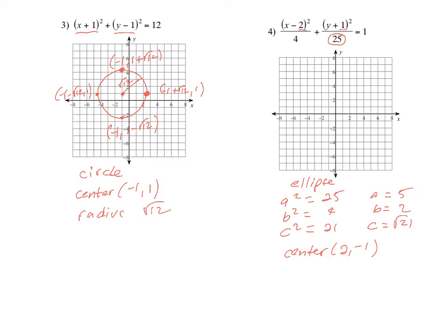Starting at the center, since the major axis is vertical we go up a (5 units) to one vertex, and down 5 units to the other vertex. B is the distance from the center to the co-vertex, so we go 2 to the right and 2 to the left. We get our ellipse looking like this.